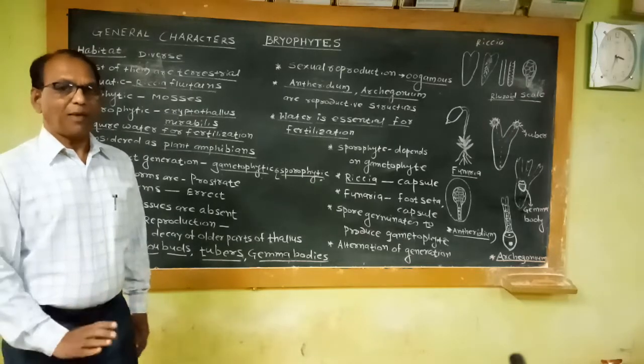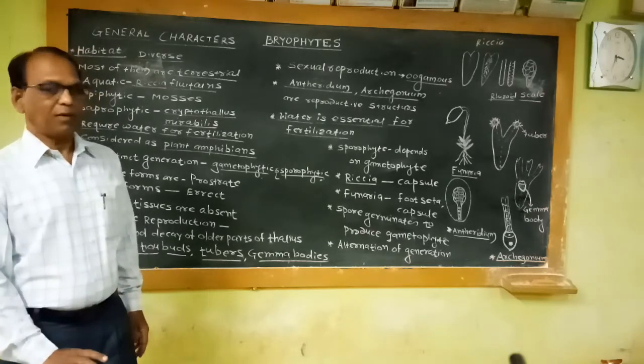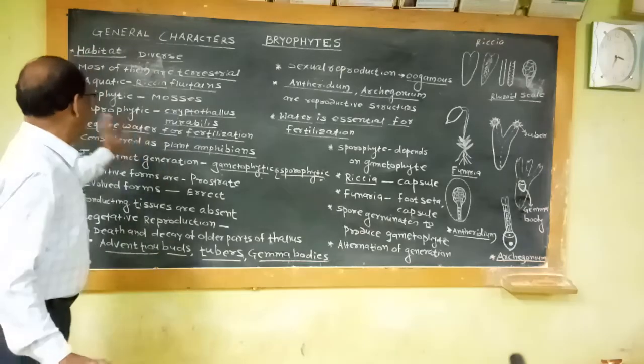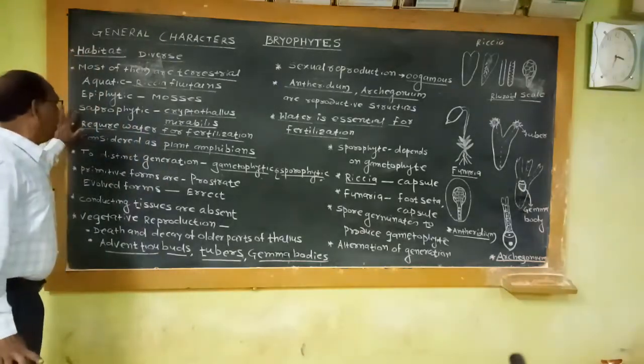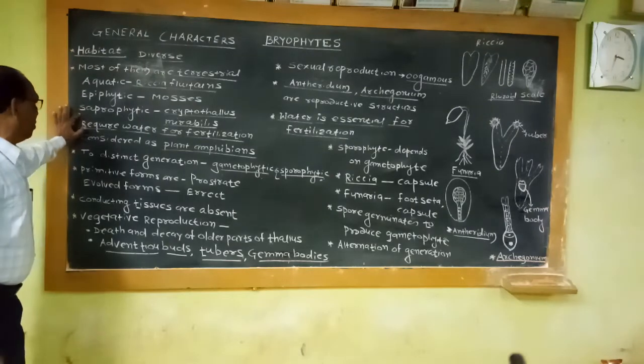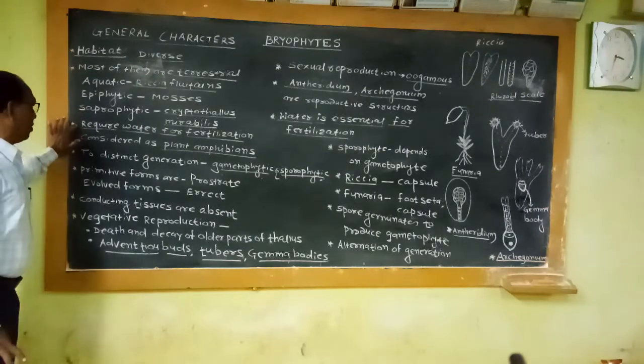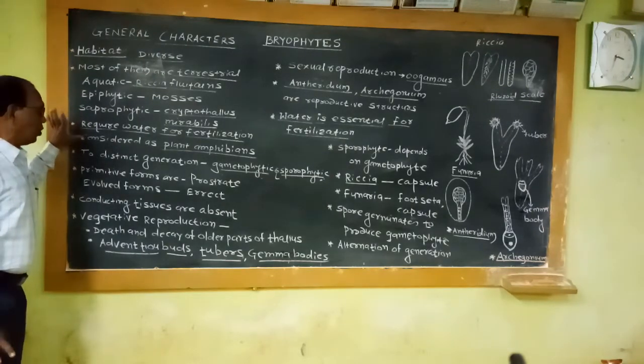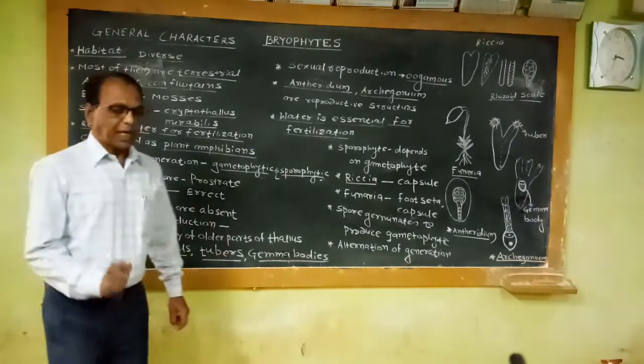For example, Cryptothallus mirabilis — this species of bryophyte grows on dead and decaying organic matter, meaning it is an example of a saprophytic bryophyte.